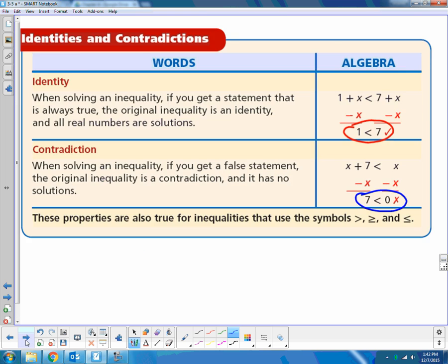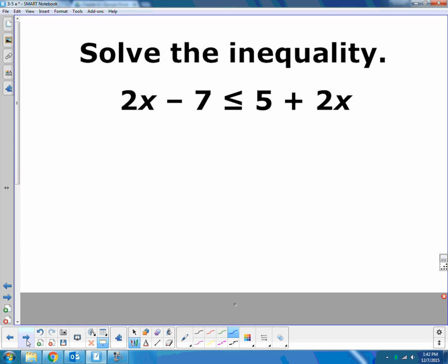So we're going to look at what happens. Let me do two on the board, or two with you, and then I'll try two on your own. So I'm solving the inequality. Same idea. I'm going to get my x's all by itself. I get that negative 7 is less than or equal to 5. Yep, negative 7 is less than 5, identity.